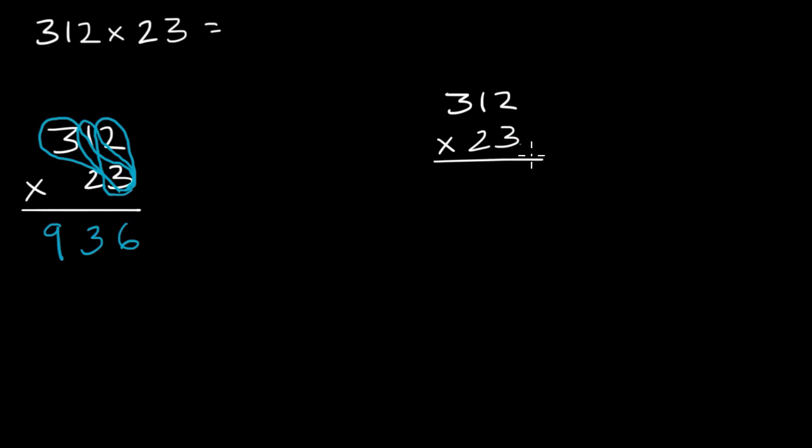Now in the partial products world, we just break that up. First we say, what is 3 times 2? Well, that is going to be 6. What is 3 times 10? Well, that is going to be 30. And what is 3 times 300? Well, that is going to be 900.